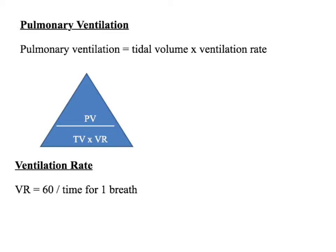Using a very similar formula to cardiac output, but this time for the lungs: pulmonary ventilation, which is the volume of air breathed out per minute. Here we've got the tidal volume, and you need to times it by the ventilation rate or breathing rate. We've got a triangle: pulmonary ventilation divided by TV (the tidal volume) times by the ventilation rate. So PV over TV times VR if you want to use the triangle.